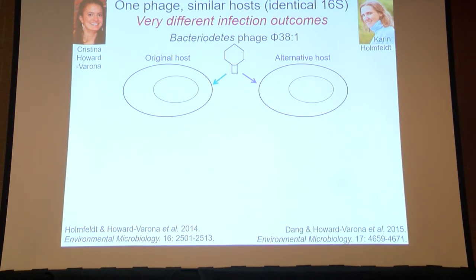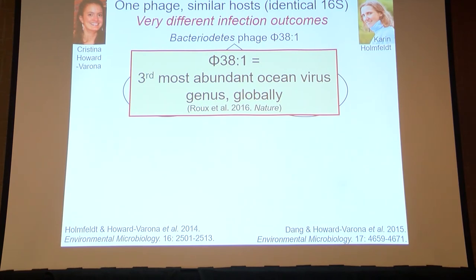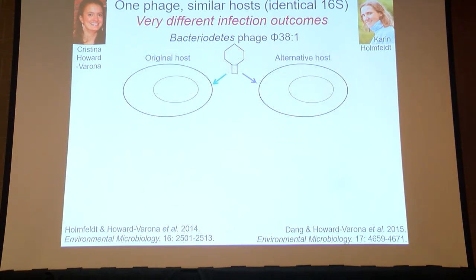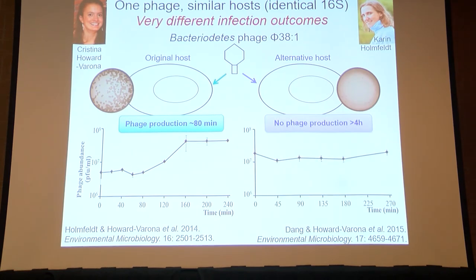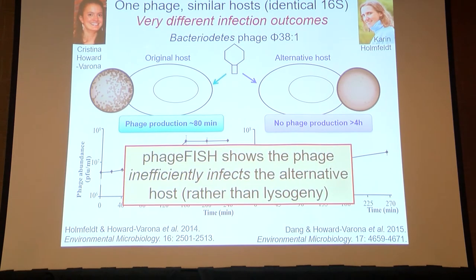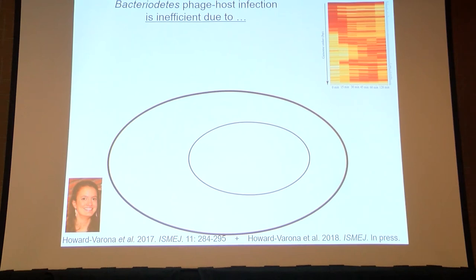Postdoc Christina Howard-Varona designed a study looking at virus 538-1, which was so abundant in the ocean, because it infected one host well and one host poorly. On the original host, we get nice clean plaques, a great one-step growth curve, and phage production within 80 minutes. On the alternative host, the same number of phage particles gives very poor, unresolved plaques and no visible one-step growth after four hours. Using a single-cell measurement called phage FISH, we confirmed this wasn't lysogeny — it was really an inefficient lytic infection.